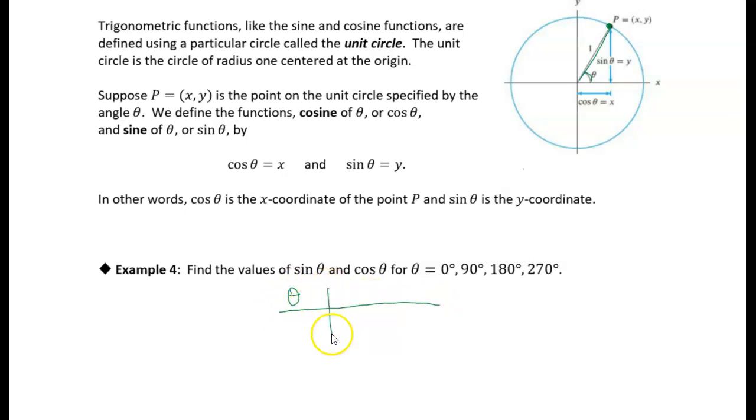I've got my theta values, and I'm going to have, I'm going to actually, I think I'll put cosine first. Cosine of theta and sine of theta. Okay, all right, so 0, we want 0, 90, 180, and 270 degrees. Okay.